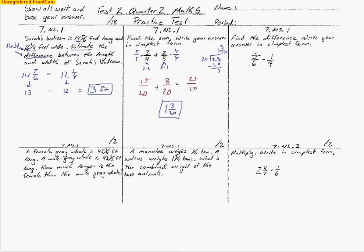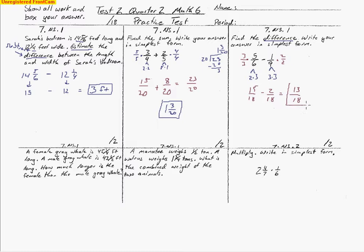The next problem asks us to find a difference — difference means subtract — and write the answer in simplest form. Breaking down the denominators: 2 and 3 make 6; 3 and 3 make 9. The 6 is missing the extra 3 to make 18, so we multiply by 3 over 3. The 9 is missing the 2, so we multiply by 2 over 2. That gives us 15 eighteenths minus 2 eighteenths, leaving 13 eighteenths as the answer.